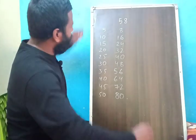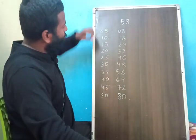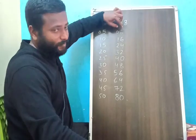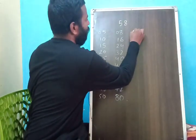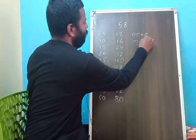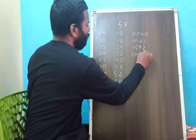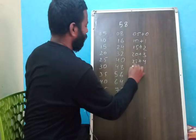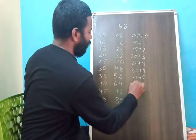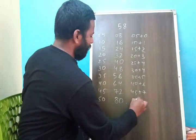Now what we should do is add each number from the 5's table to the first digit of the corresponding number in the 8's table. So: 5 plus 0, 10 plus 1, 15 plus 2, 20 plus 3, 25 plus 4, 30 plus 4, 35 plus 5, 40 plus 6, 45 plus 7, and 50 plus 8.